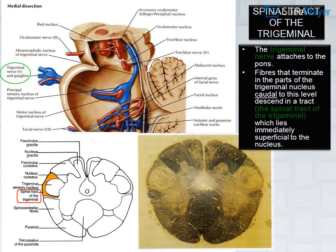This caudal part of the trigeminal nucleus is particularly associated with the modalities of pain and temperature. The trigeminal nerve attaches to the pons; fibers that terminate in the parts of the trigeminal nucleus caudal to this level descend in the spinal tract of the trigeminal, which lies immediately superficial to the nucleus.